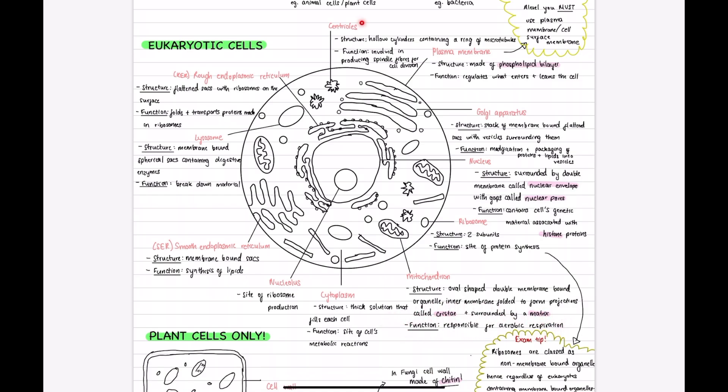The centrioles are hollow cylinders which contain a ring of microtubules that are involved in producing spindle fibres that are needed for cell division. The cytoplasm is the thick solution that fills each cell which contains all these organelles and is the site of the cell's metabolic reactions.